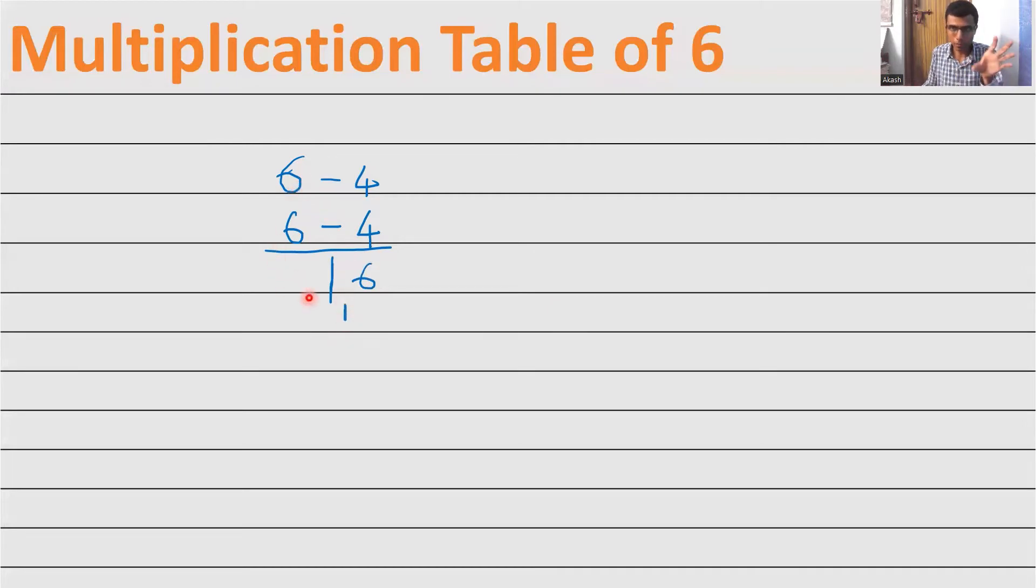So you just need to take 6 here and 1, you need to put for the carry. Now for the left part, what you need to do is cross subtraction, like start from the left top. 6. And here you have 4. What is 6 minus 4? 2. Now here you have 1 for carry. 2 plus 1 is 3.